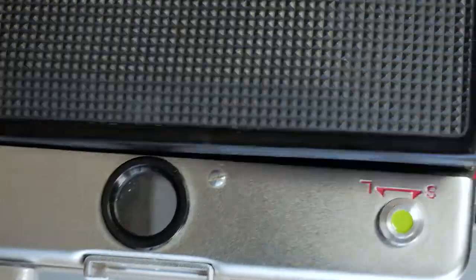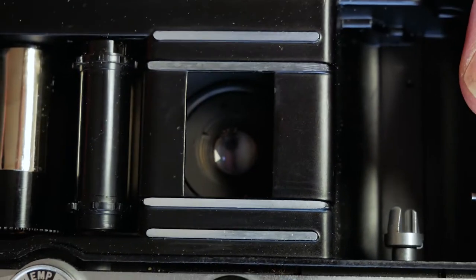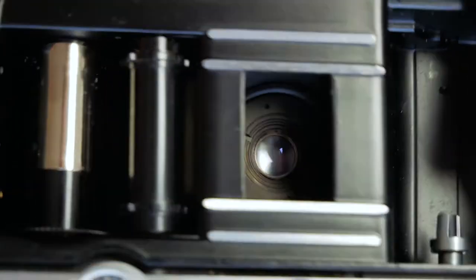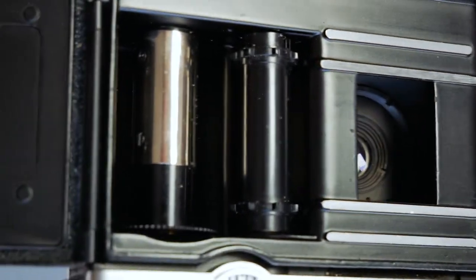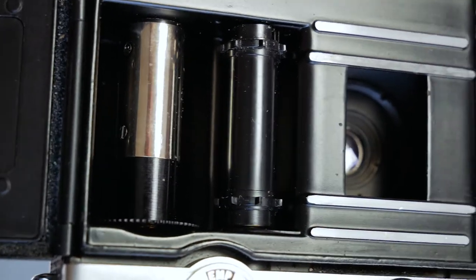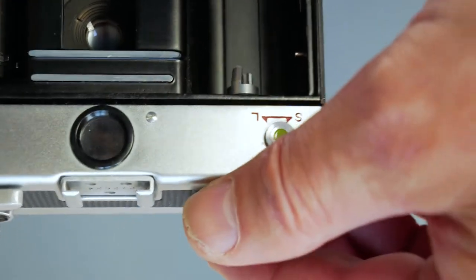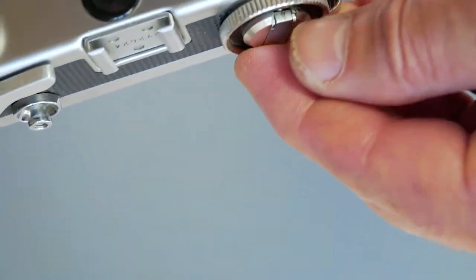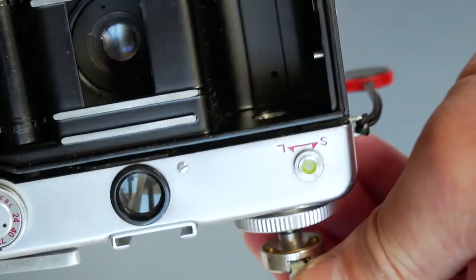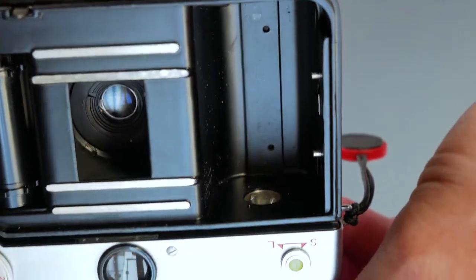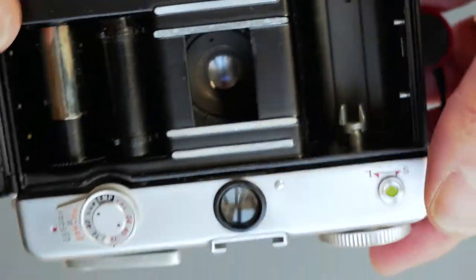While I'm around the back, I'll open the back up. You can see the half frame right there. Take-on spool - that's where your film goes in there. Pull that out, pull that up to get the canister in, like so.